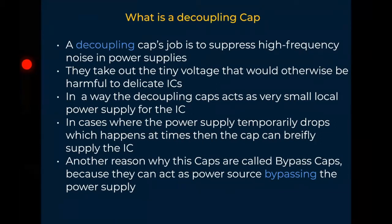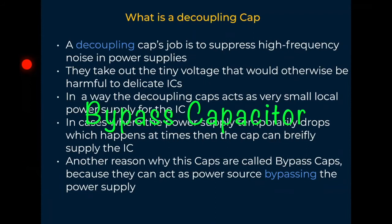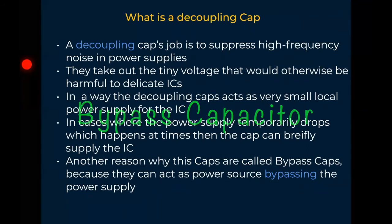They hold some power temporarily so that they can supply the IC at some point if we don't have enough supply from the main supply. And this is why, for this reason, they are also called bypass caps. If you hear someone talking about a bypass cap, it's basically a decoupling capacitor.